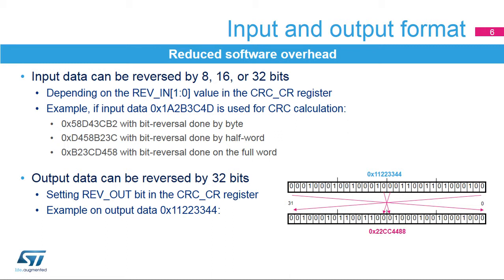The output data can also be reversed by setting the REV_OUT bit in the CRC_CR register. The operation is done at bit level. For example, output data 0x11223344 is converted into 0x22CC4488.